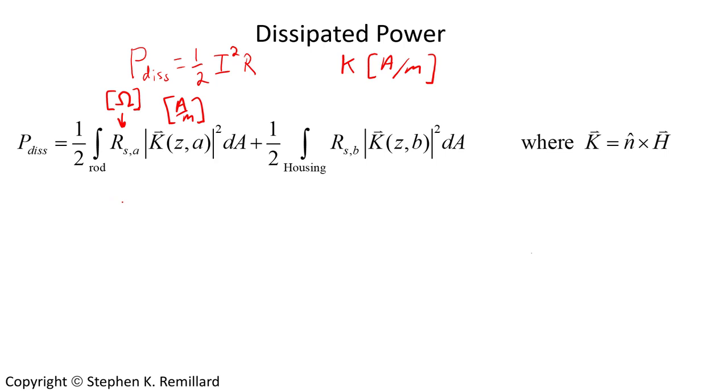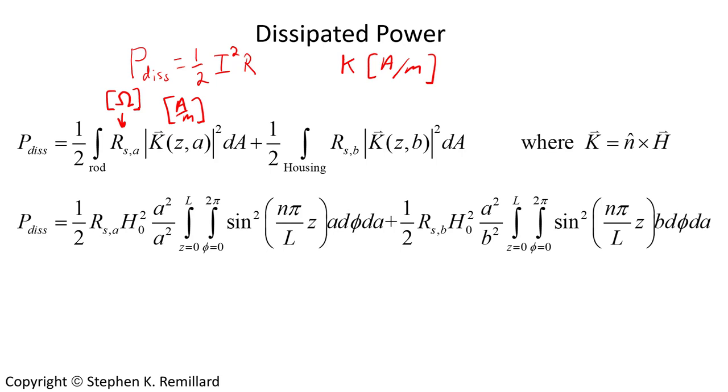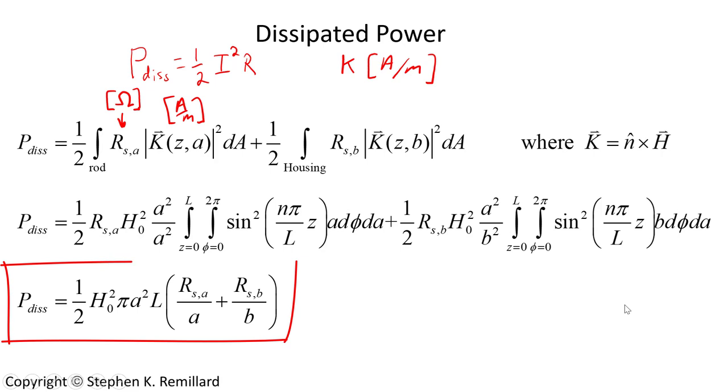This integration needs to be done over all surfaces so the rod and the housing are separate surfaces, they are different radii a and b. You can put in the expression then that we're going to use for the magnetic field H since we're interested in the magnitude of n cross H and n that is normal to the surface and H the magnetic field at the surface are already perpendicular to each other you just have to put H squared in for K squared. So put that in, the same thing happens over the housing surface and it's the same argument, you also have an integral over sine squared, it's just now the radius is b instead of a. Solve these integrals and you have the dissipated power inside the resonator in terms of the surface resistance on the rod and the surface resistance on the housing. I wrote them out as separate values because they might be different materials.